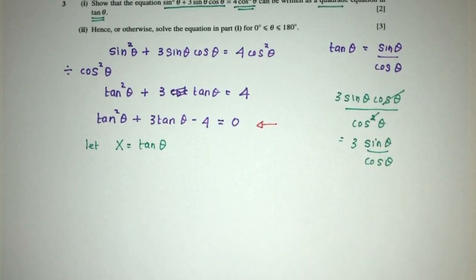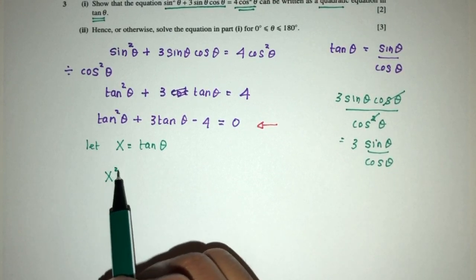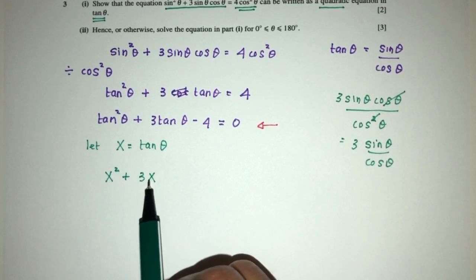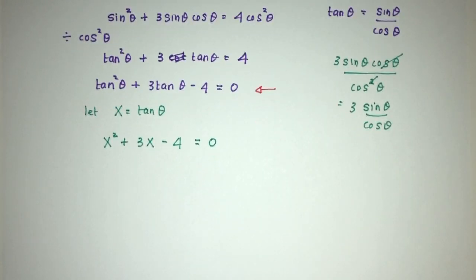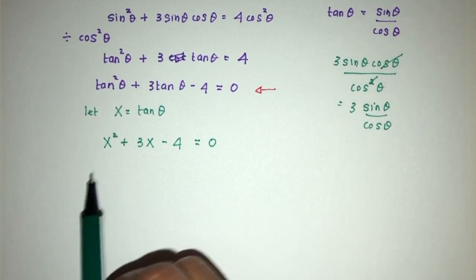Let's see what happens. This is just to help you. It becomes x² + 3x - 4 = 0. Now we can solve this pretty easily. You can do by factorization or use your formula. Let's try factorization.